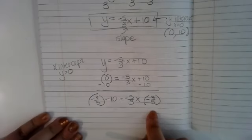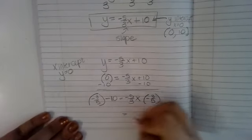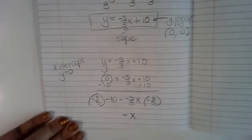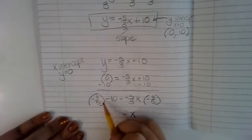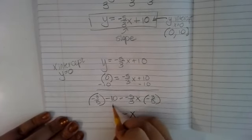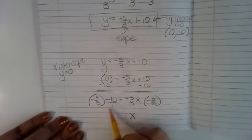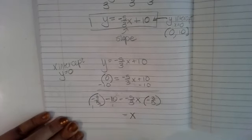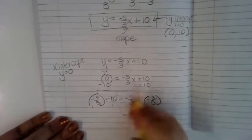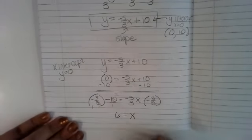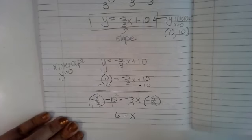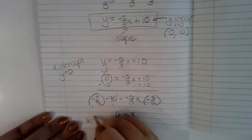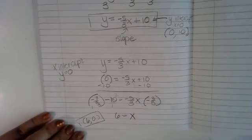If I simplify the right side, I get something like 15 over 15, and since the numerator and denominator are the same it creates one whole, leaving just x. On the left, 10 over 1 multiplied by the reciprocal — I can cross-simplify: this becomes 1 and this becomes 2, so negative 3 times negative 2 gives positive 6. So x equals 6.